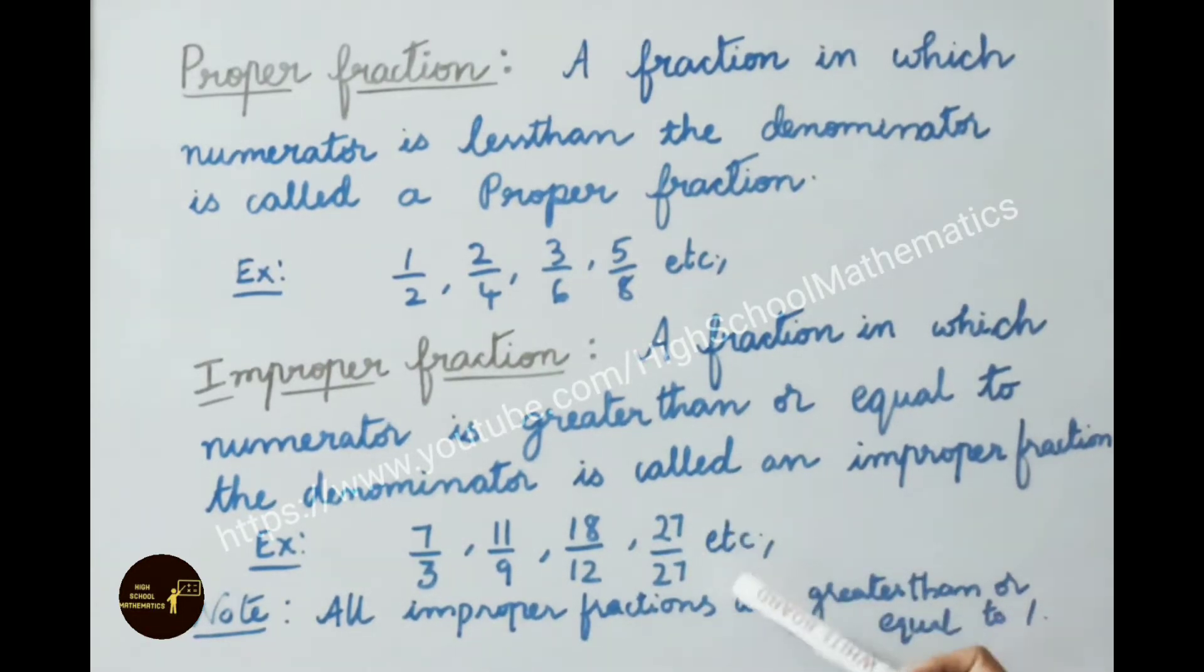Here numerator is equal to denominator and rest of all examples, numerator is greater than the denominator. So all those are examples for improper fraction. Note: all improper fractions are greater than or equal to 1.